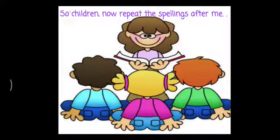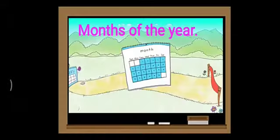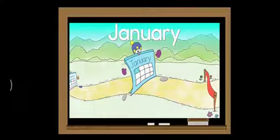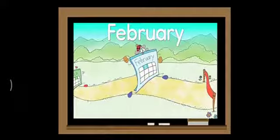Now, repeat the spelling after me. Months of the year. January — J-A-N-U-A-R-Y — January. Note: the U is not stressed, it's January. February — F-E-B-R-U-A-R-Y — February.